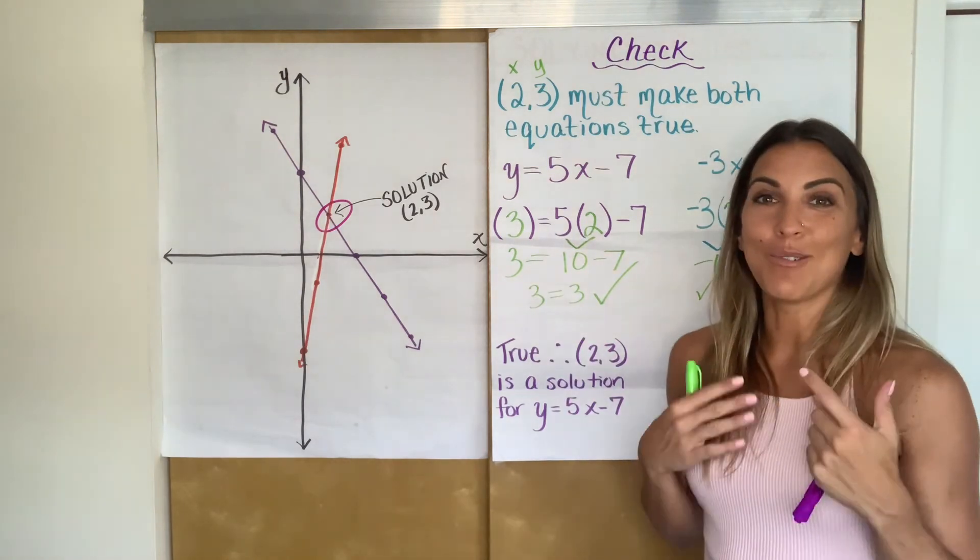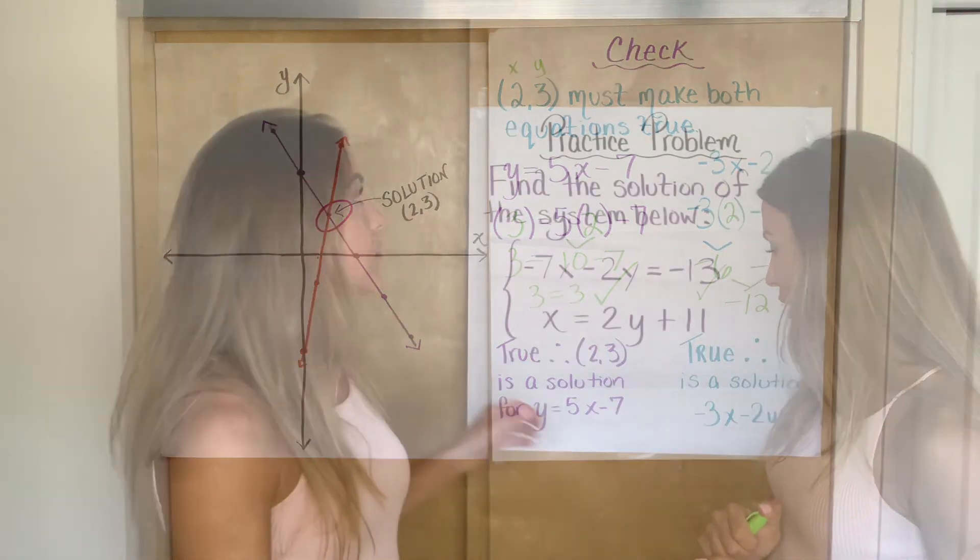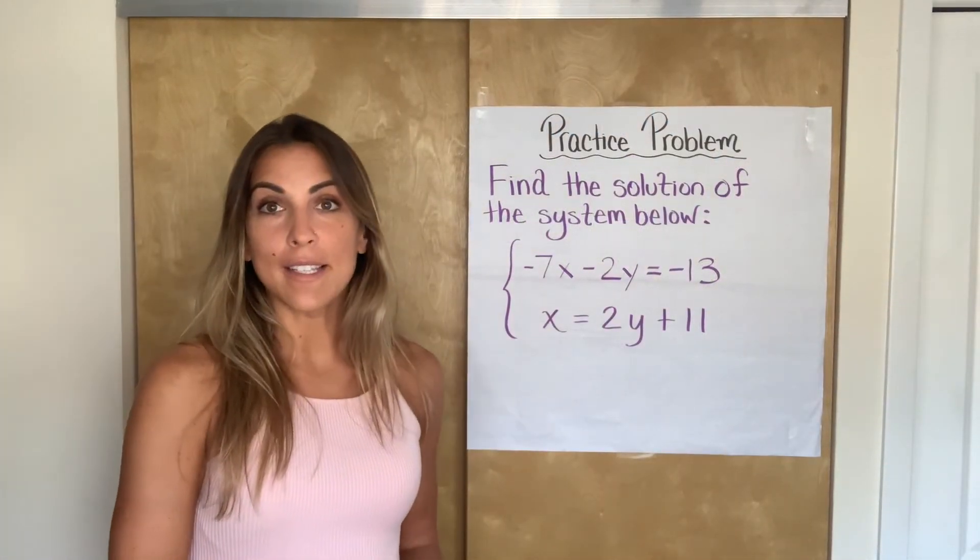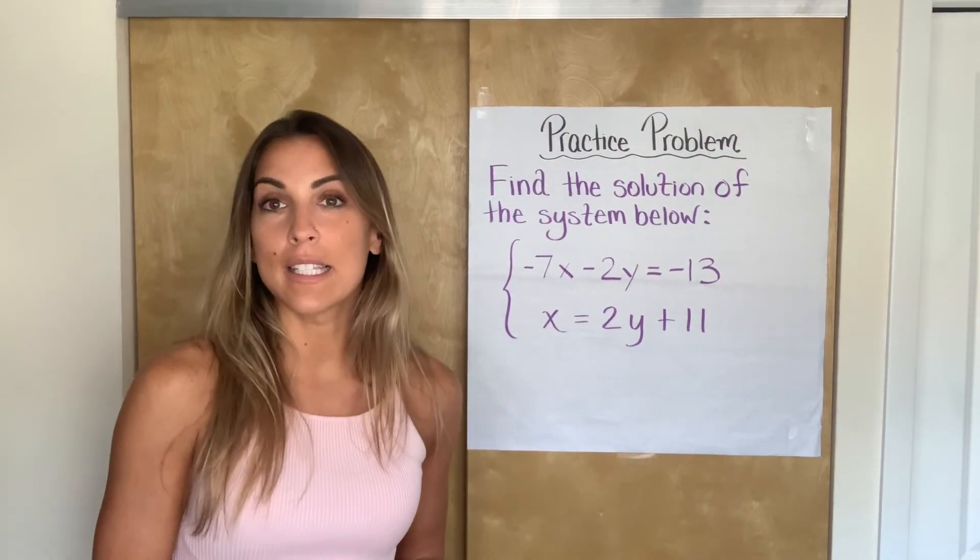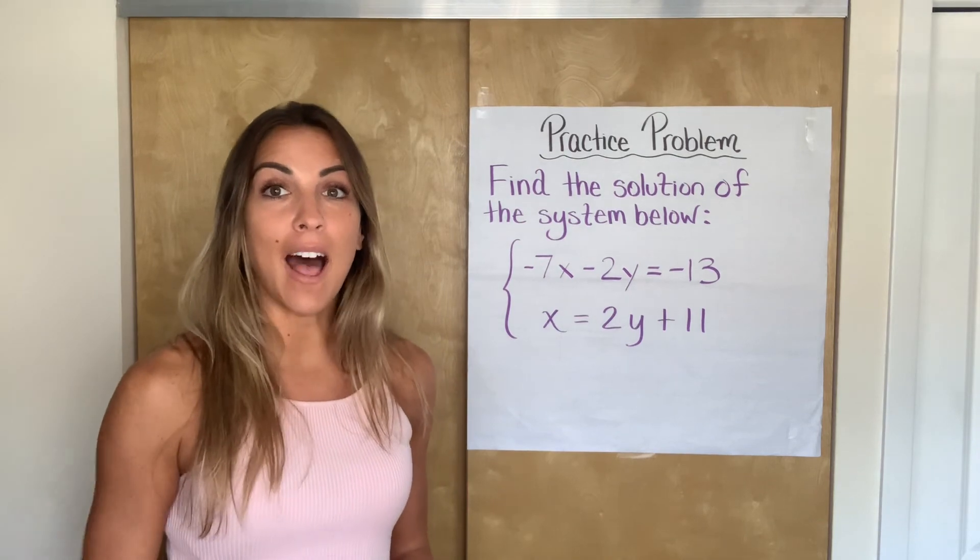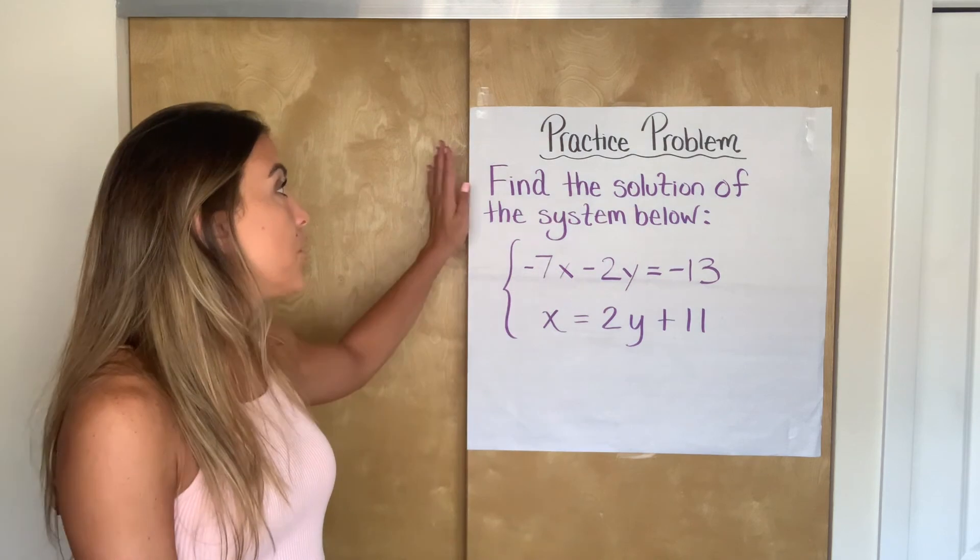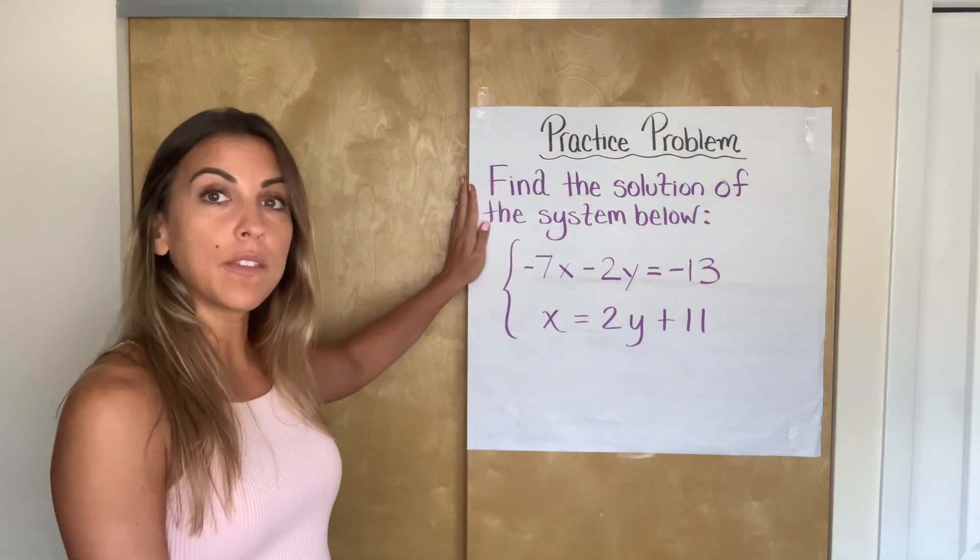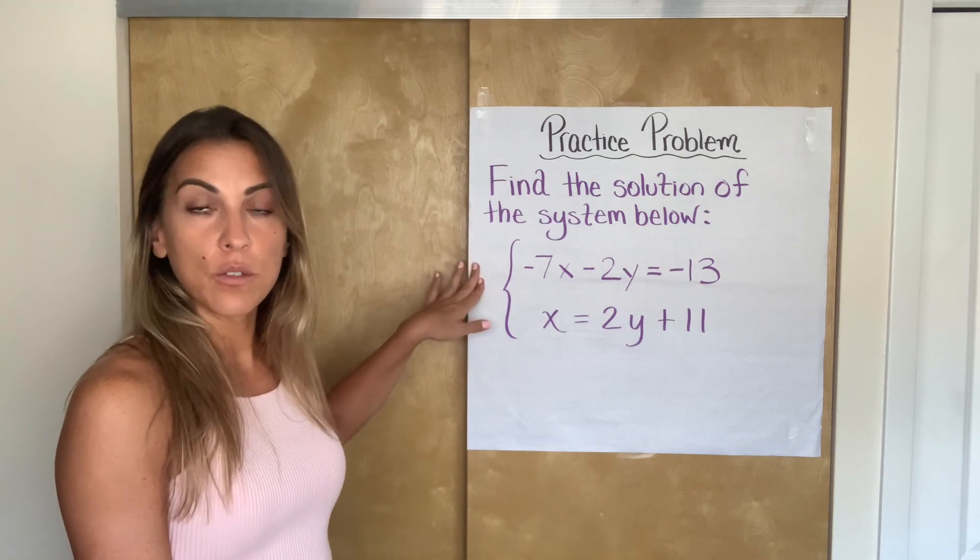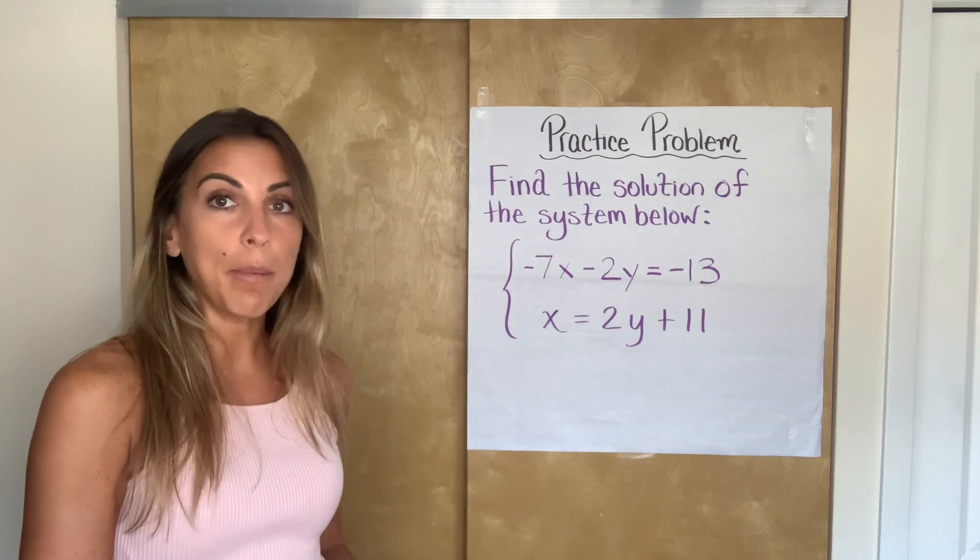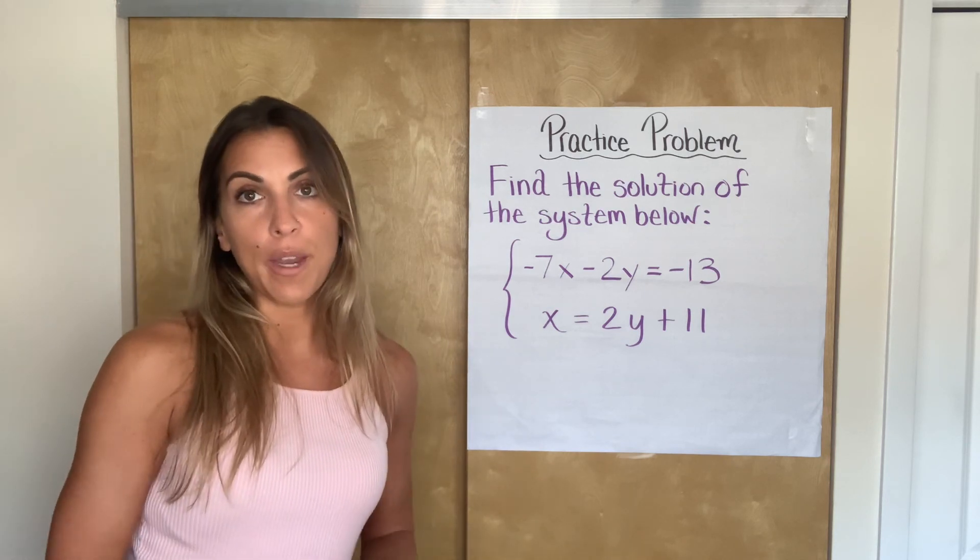So that is how to solve and check and verify by graphing a system of linear equations. All right, guys, in an effort to not make this video longer than it already is, if you want to see an example where one of the variables is not already isolated, watch the next video. I'm going to do one of those there. In the meantime, here's your practice problem. I will write the solution for this in the description of the video. So try it on your own. Check the solution. See if you get it right. If you do a great job. If you don't and you are struggling to find your mistake, please feel free to reach out and I will try to help you.